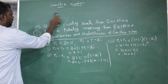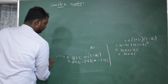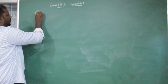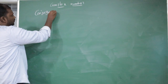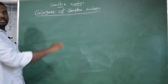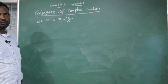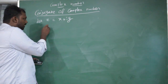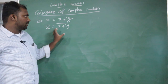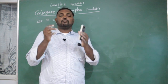Now the concept of conjugate of a complex number. If Z equals x plus iy, then the conjugate, written as Z-bar, equals x minus iy. To find the conjugate, we change the sign of the imaginary part — change the middle symbol.